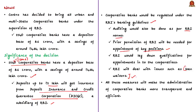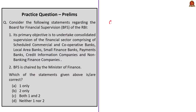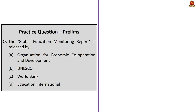All these measures will make the administration of cooperative banks more transparent and efficient, which is necessary for a healthy financial system and to maintain depositor confidence in cooperative banks. To summarize, we saw the decision of the central government to bring all urban and multi-state cooperative banks under the supervision of RBI, and we also saw the Board for Financial Supervision of the Reserve Bank of India — its functions and objectives. Now, have a look at the practice question.